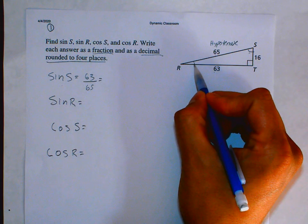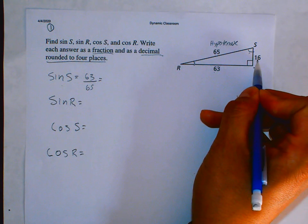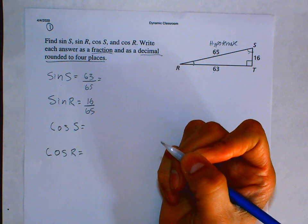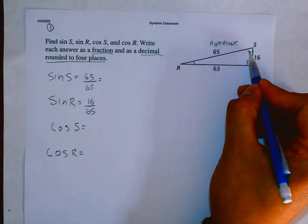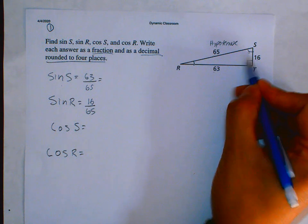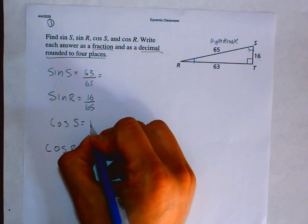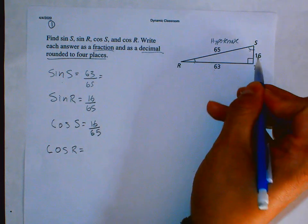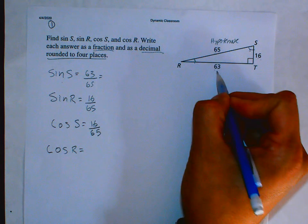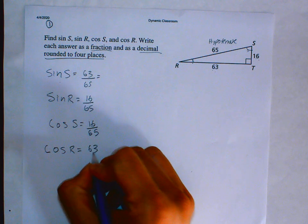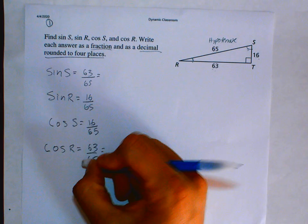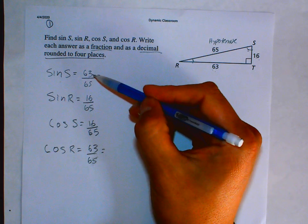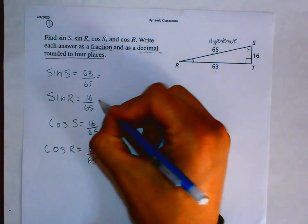The sine of R is the opposite over the hypotenuse — that's 16 over 65. Now for the cosine of S: cosine is adjacent over hypotenuse. If the opposite side is one leg, then the adjacent is the other leg, so cosine of S = 16/65. For the cosine of R, cosine wants the adjacent over the hypotenuse, so cosine of R = 63/65. Now we're going to plug these into the calculator and see if anything reduces — I don't think anything here reduces.